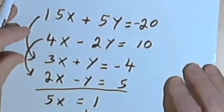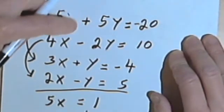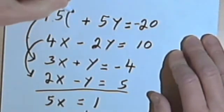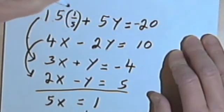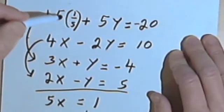So let's look and see what we've got here. Well, in this first equation, I've got 15x. So if I just put a 1 fifth there instead of the x, I've got 15 times 1 fifth. And 15 and 5 are both divisible by 3.